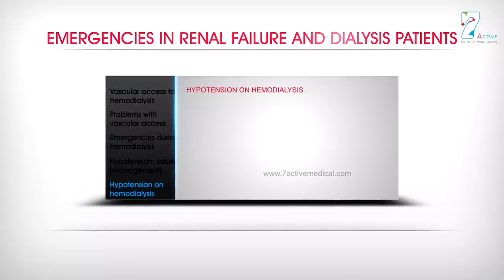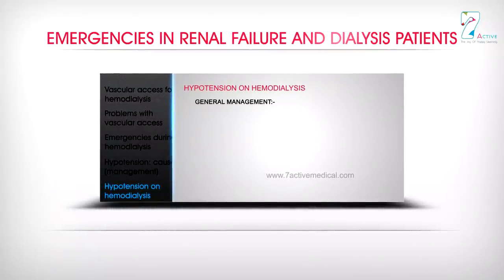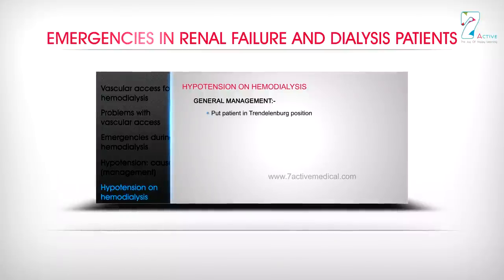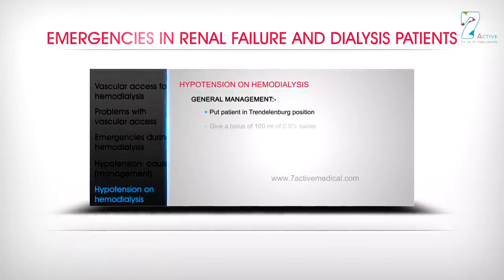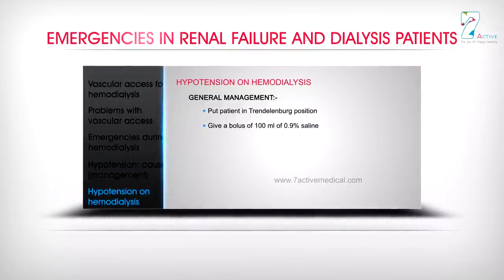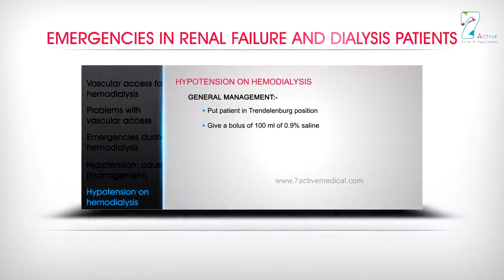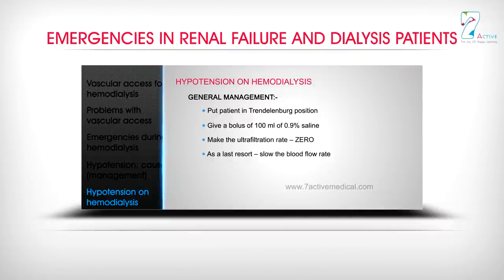General management of hypotension on hemodialysis: put patient in Trendelenburg position; give a bolus of 100 ml of 0.9% saline; make the ultrafiltration rate zero; as a last resort, slow the blood flow rate.